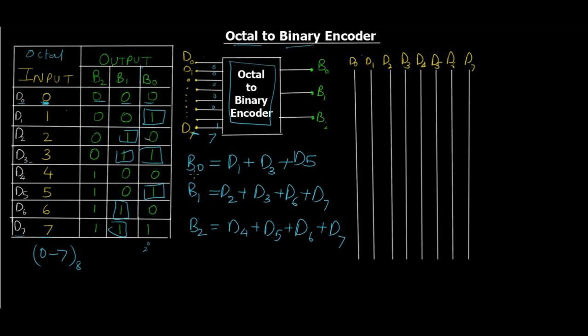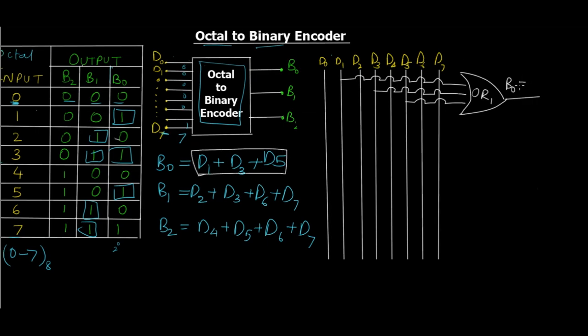Now let's see the expression. B0 is given by D1 OR D3 OR D5. Let's draw the output lines and circuit lines. For D1, we know this is that line. For D3, this is the line, and lastly we have D5, so this is that line. We have an OR operation in all these three, so let's draw an OR gate. This is OR gate 1, which gives us B0.